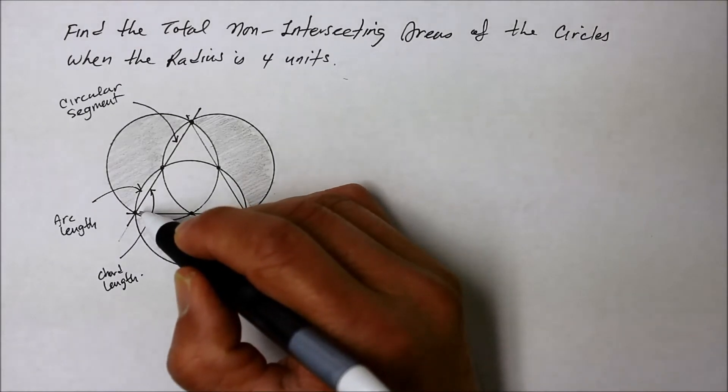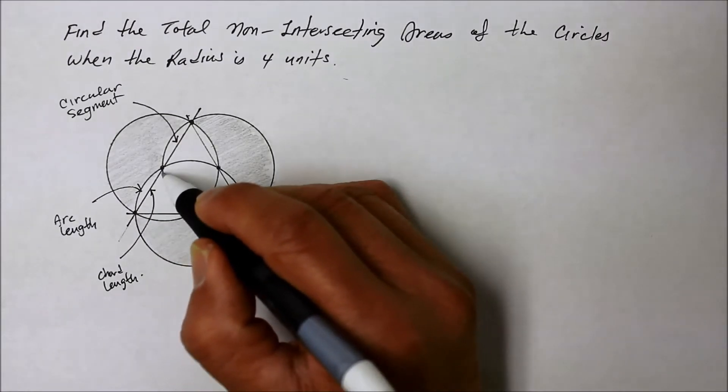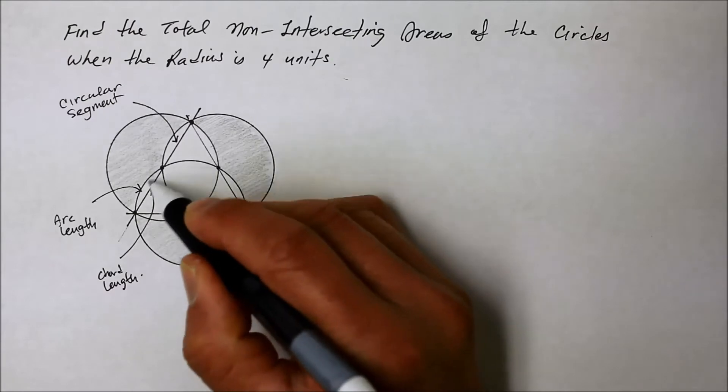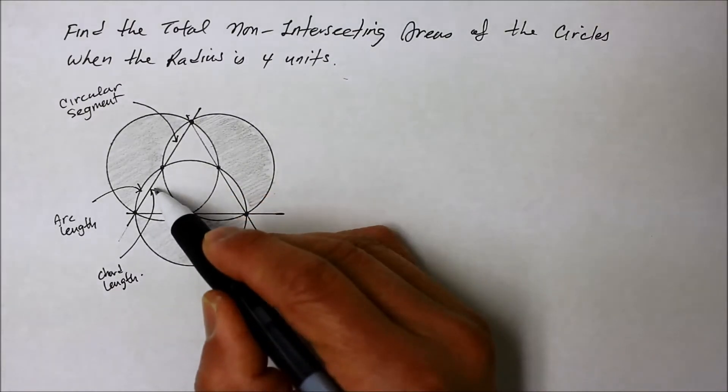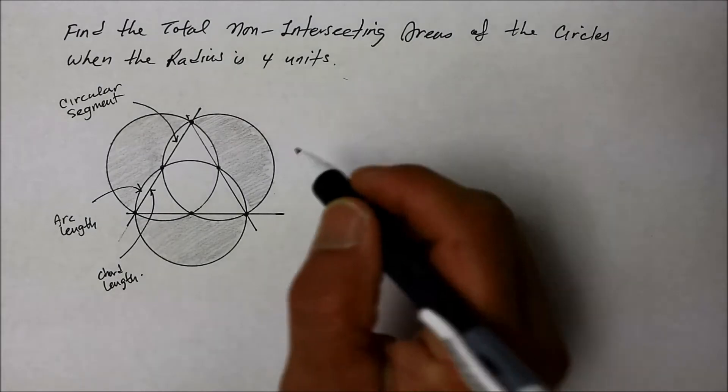But we will need to know the chord length because that is the chord. The definition of a chord is a line that goes from one circumference to the other and not going to the center of a circle. So we need to know that. Now I'll explain why.